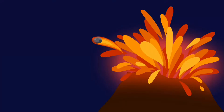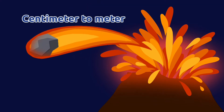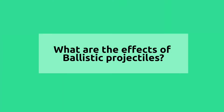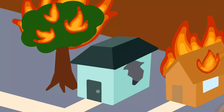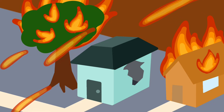Volcanic ballistic projectiles are centimeter-to-meter-sized pyroclasts. These are fragments of solid blocks or bomb material during the range of magmatic or phreatic explosive eruptions. The fragments of lava or solid rock, ranging from centimeters to several meters in diameter, are erupted with high thermal energy.